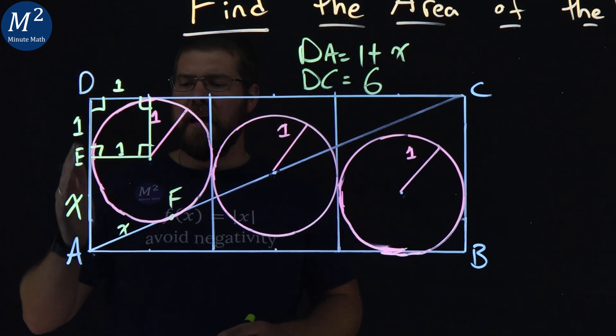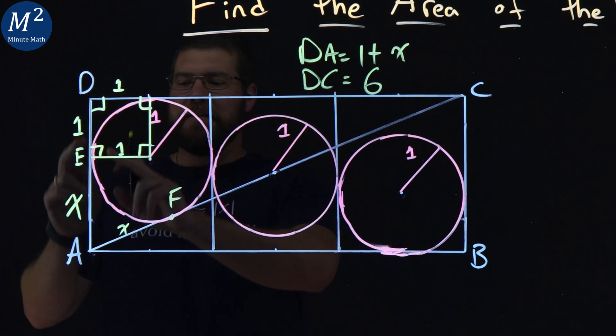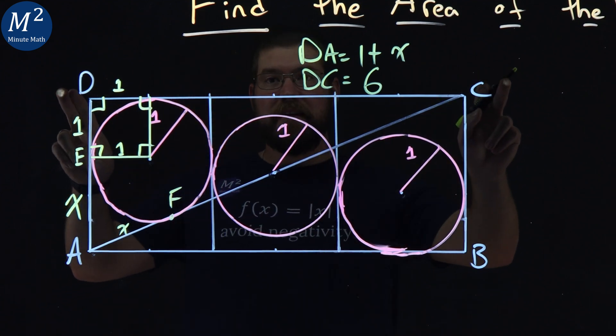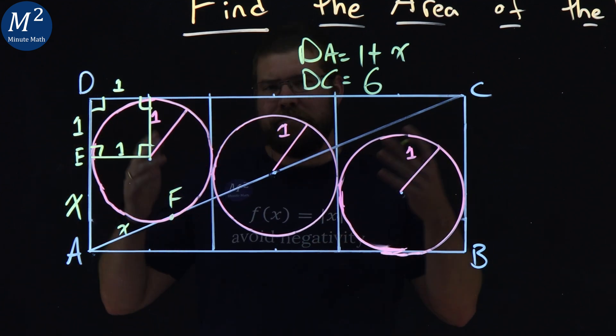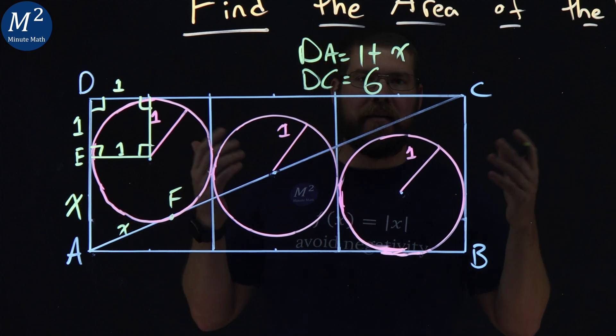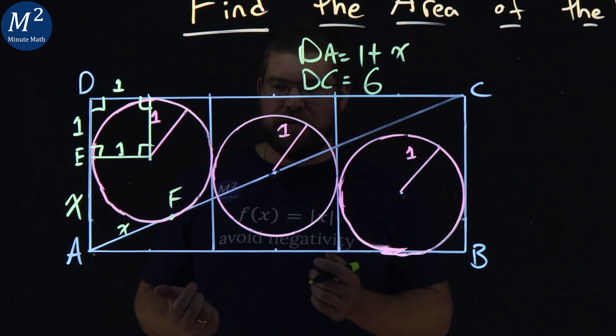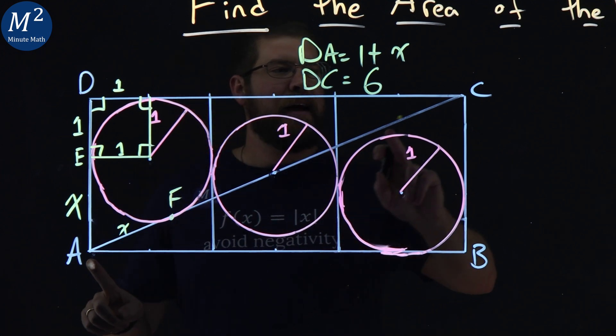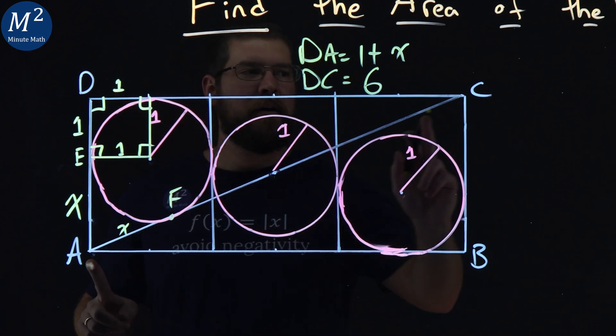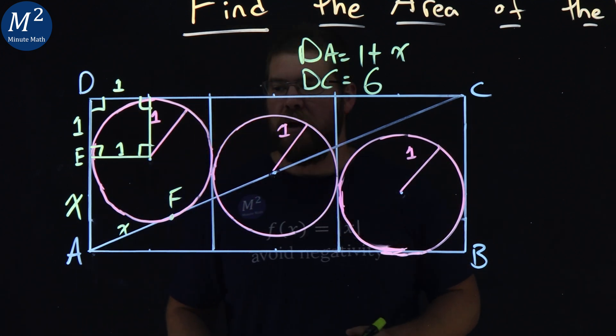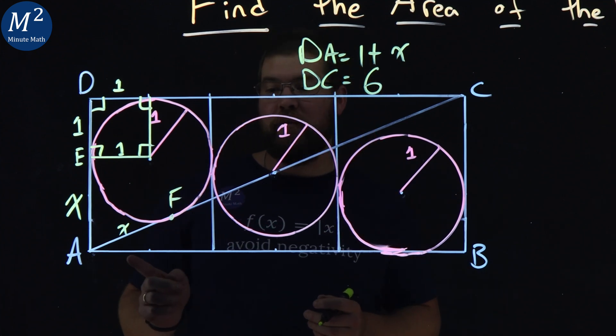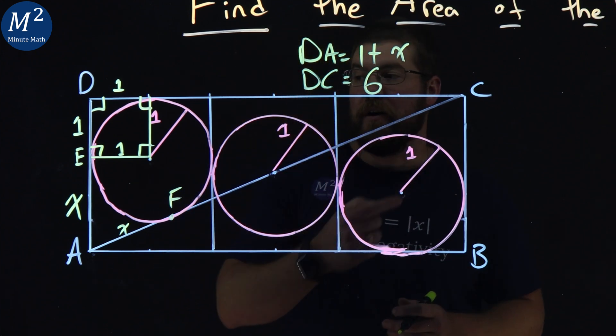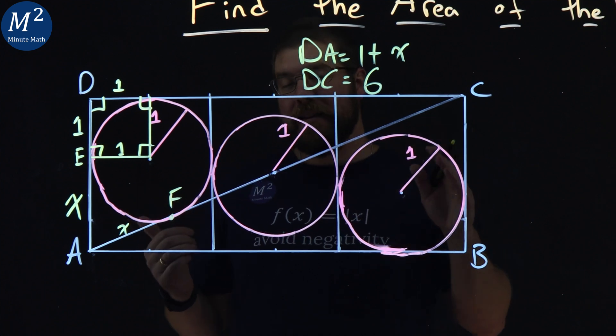So we have DA is 1 plus X, DC is 6. If I can multiply them together, I got the area of the rectangle, length times width, but I still have an X. What about the length of this diagonal? We have a right triangle going on right here.